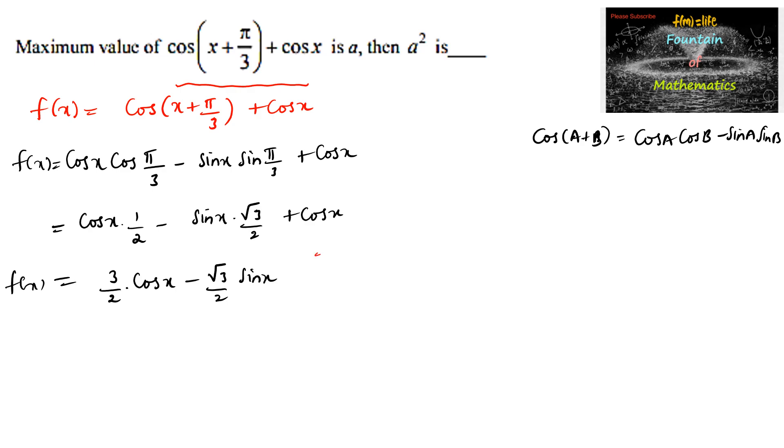It is in the form of A cos(x) + B sin(x), whose minimum value and maximum value is √(A² + B²). Here A is equal to 3/2, B is equal to -√3/2.